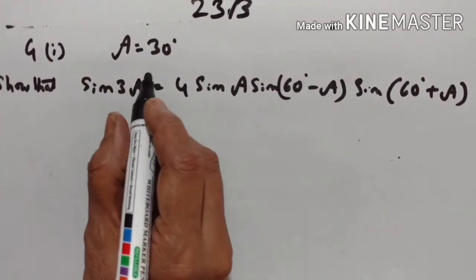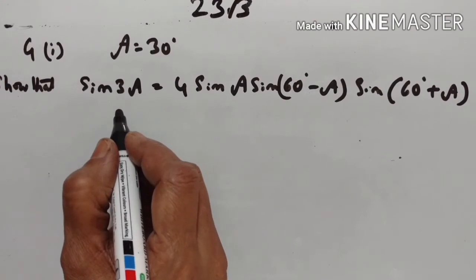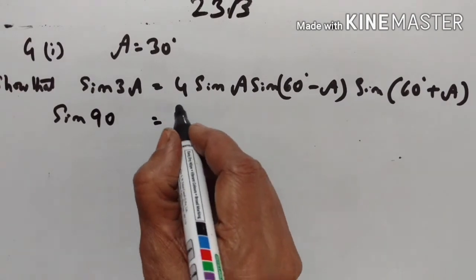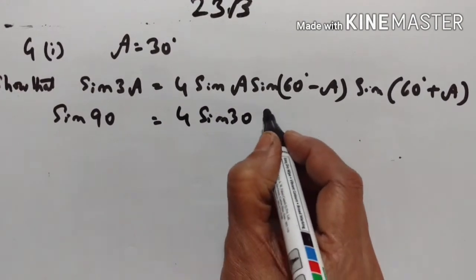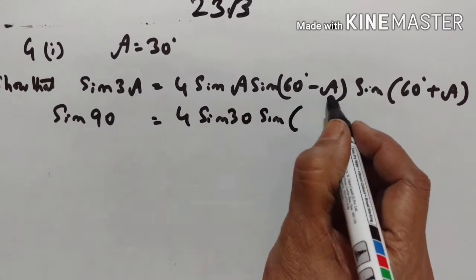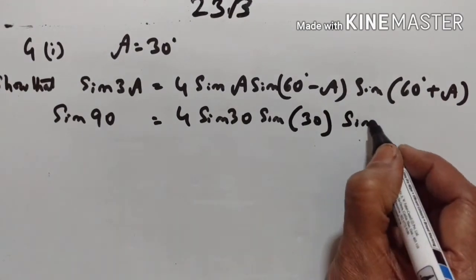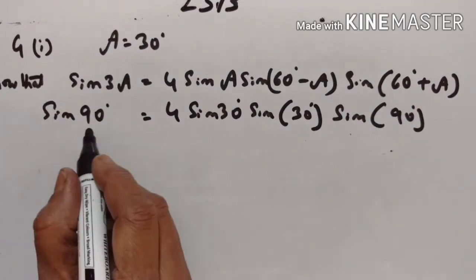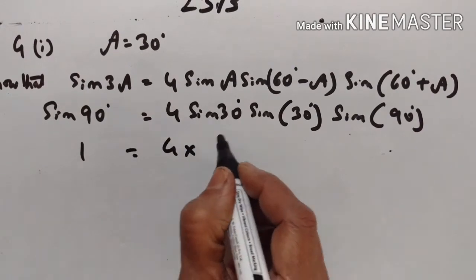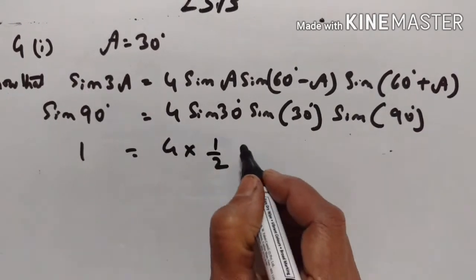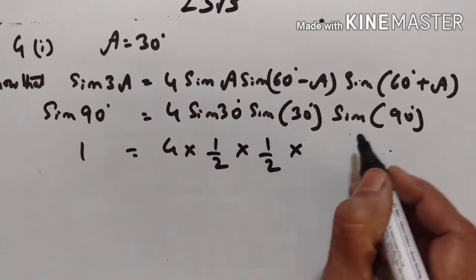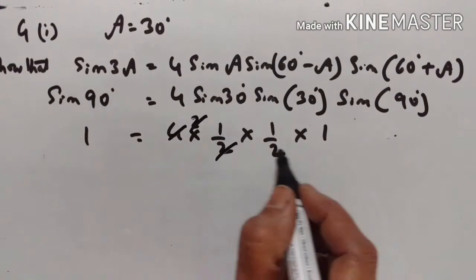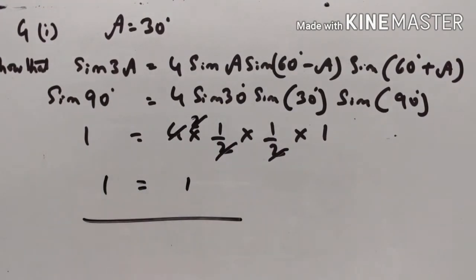Sin 3A, with A equal to 30. So 3 into 30 is equal to 90. Sin 90 is equal to 1. Sin A equals sin 30; sin(60 minus 30) equals sin 30, and sin(60 plus 30) equals sin 90 which is 1. 4 into sin 30 equals half. Sin 90 is equal to 1. 2 twos are 4, 2 ones are 2. So 1 is equal to 1. LHS is equal to RHS.